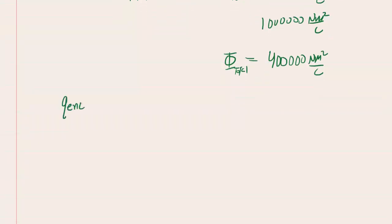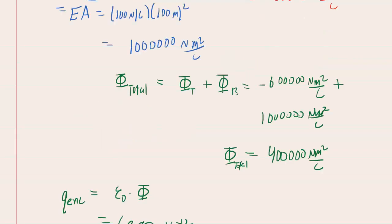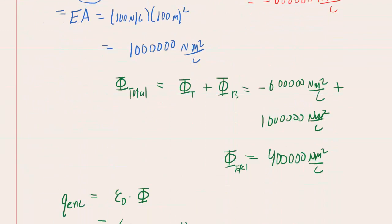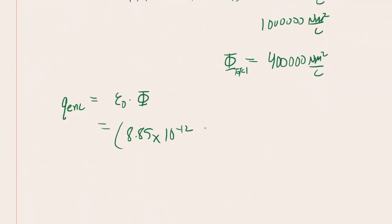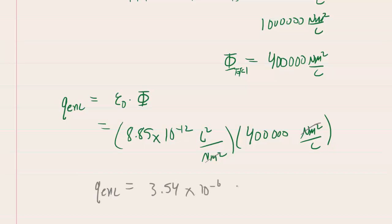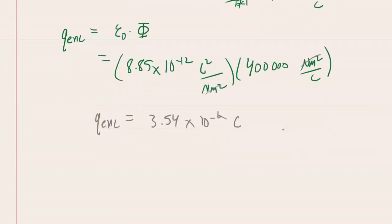Recall that Gauss's law said the enclosed charge equaled a constant times the electric flux. So we take this constant value, which is 8.85 times 10 to the minus 12, and then it has this really funky unit of coulombs squared per newton meters squared. Multiply this by the total flux. And if we look carefully, dimensionally, the newton meters squareds will cancel. And coulombs squared divided by coulombs is just coulombs. So we pick up our calculators, we multiply this out, and we get an enclosed charge of 3.54 times 10 to the minus sixth. And this will come out into coulombs.